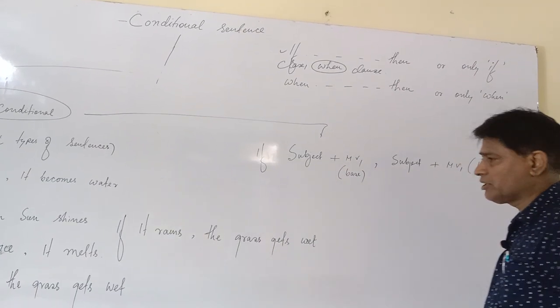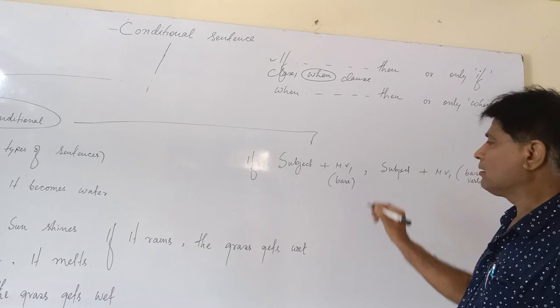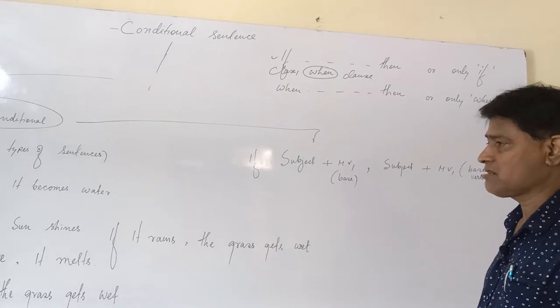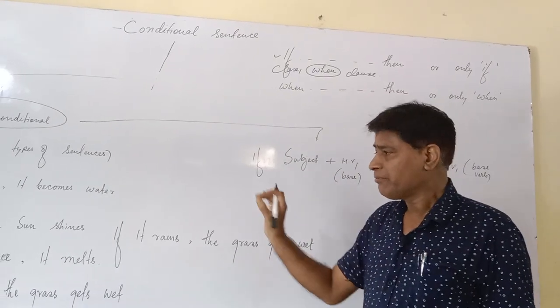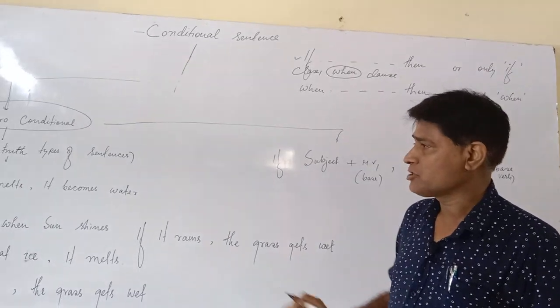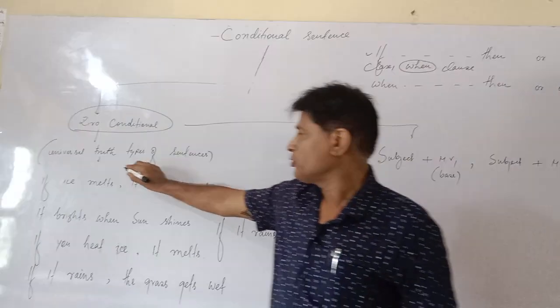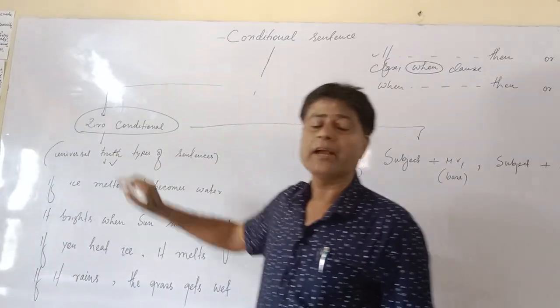This is the structure where you can make the zero conditional sentences, but the format of zero conditional sentences should be always in universal truth types of sentences.